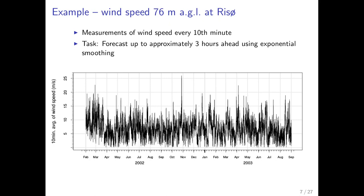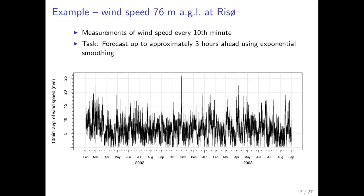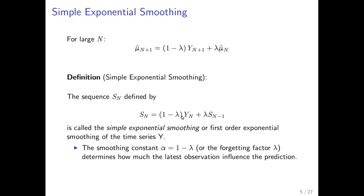We'll look at a case from Risø campus where they measure the wind speed 76 meters above ground level, making a measurement every 10 minutes, and they want to make a three-hour forecast. Here we can see a lot of data. If we do the sum of squared prediction errors — first for a 10-minute prediction, that means a one-step prediction error — we get the sum of squares for different values of alpha. What we see is that we should use an alpha value very close to one, at 0.95 or higher. That means the estimator is basically the most current observation; at least 95% of the weight is given to that.